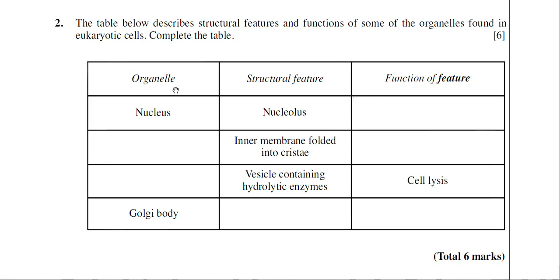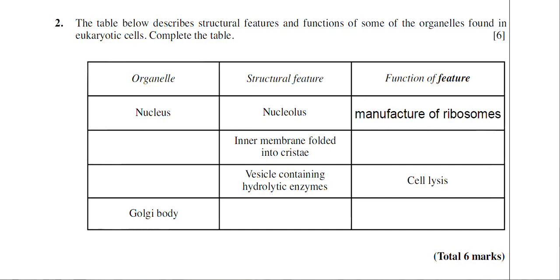Looking at the first row, you've got the nucleus as the organelle. The structural feature is the nucleolus, which is a dark-stained region within the nucleus, very obvious in electron micrographs of the cell. The third column is the function of the feature. So what is the function of the nucleolus? It's the region where ribosomes are manufactured in the nucleus — the manufacture of ribosomes.